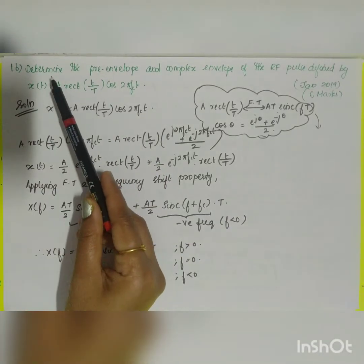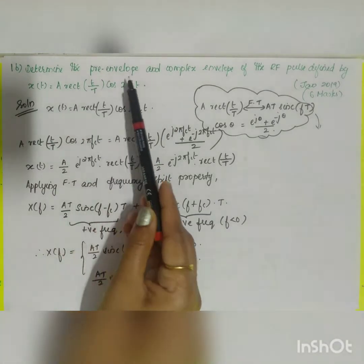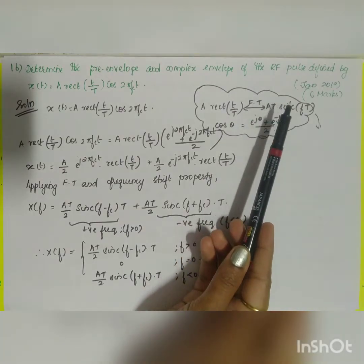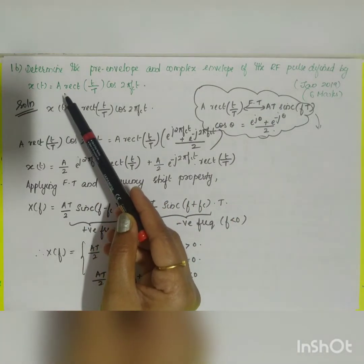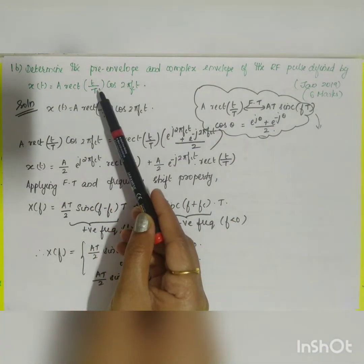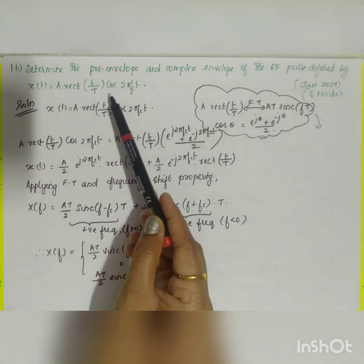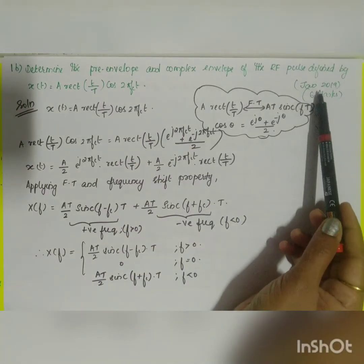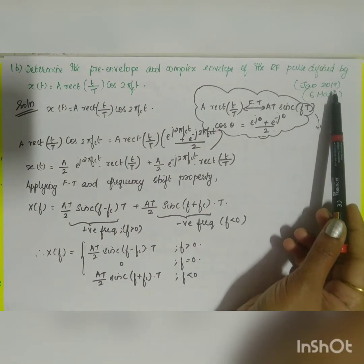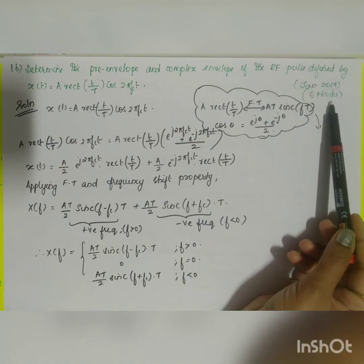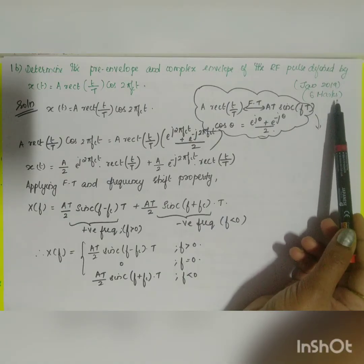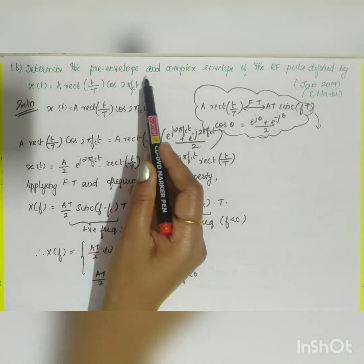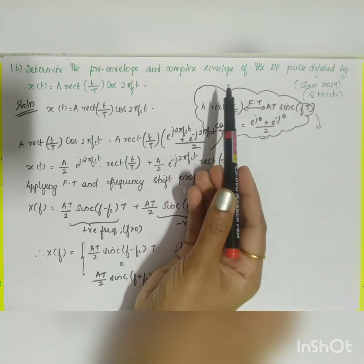The next question is part B: determine the pre-envelope and complex envelope of the RF pulse defined by x(t) = A·rect(t/T)·cos(2π·fc·t). It is from the January 2019 question paper and is asked for 6 marks. We have to determine the pre-envelope and the complex envelope.